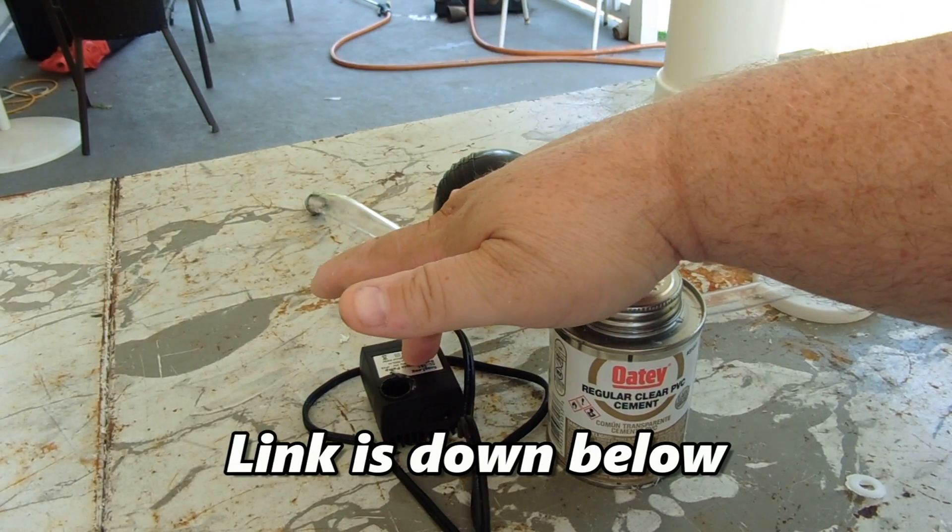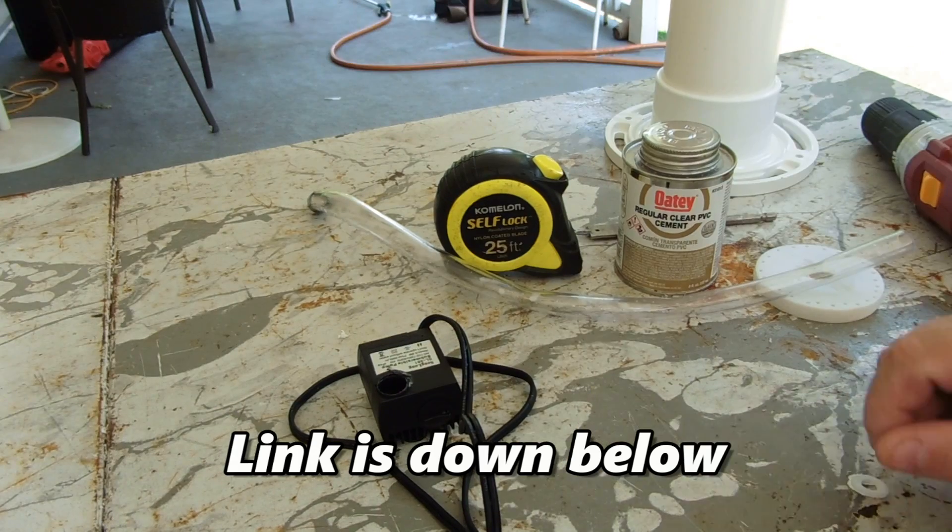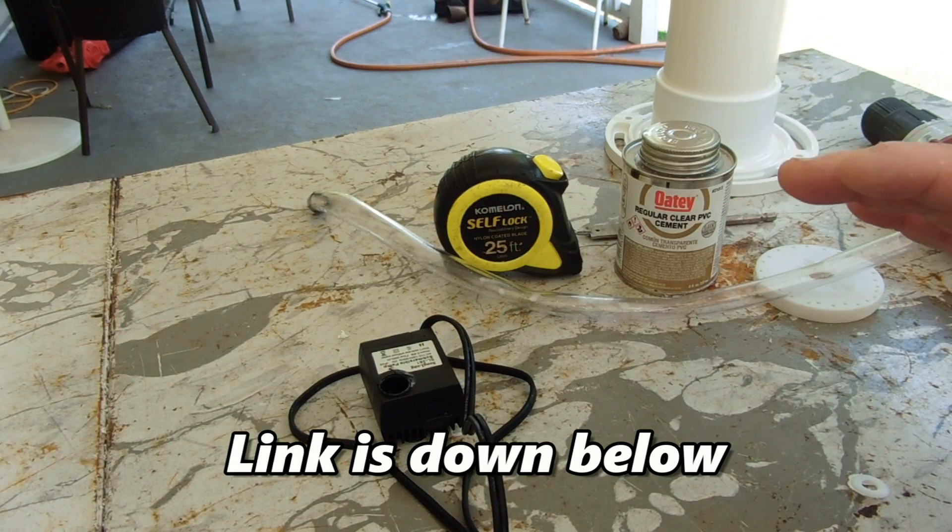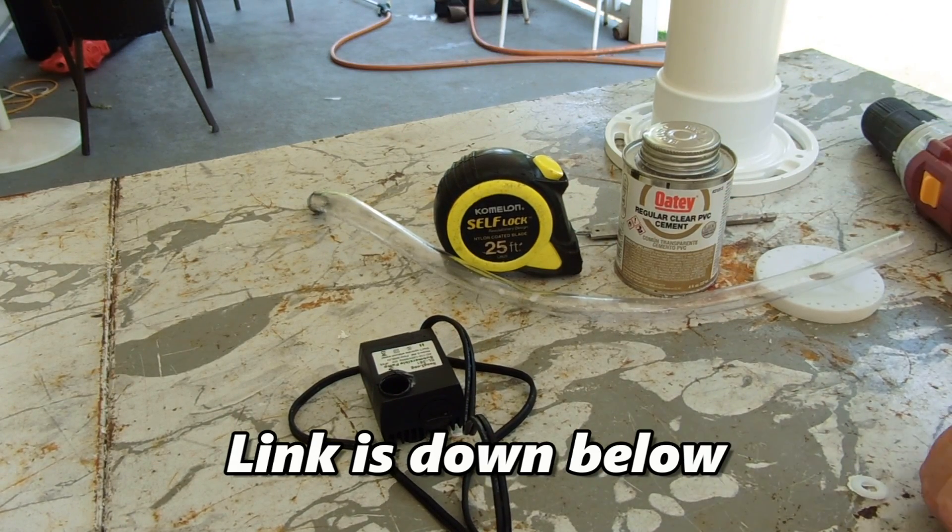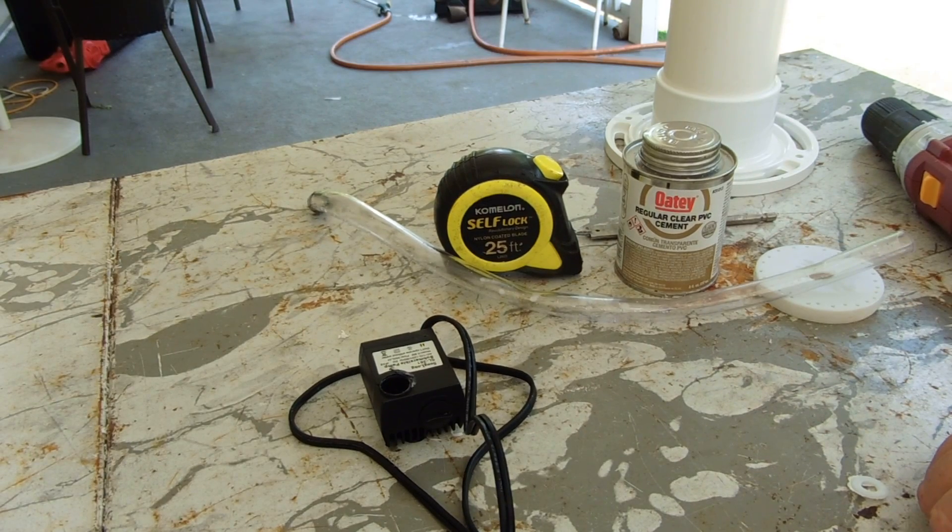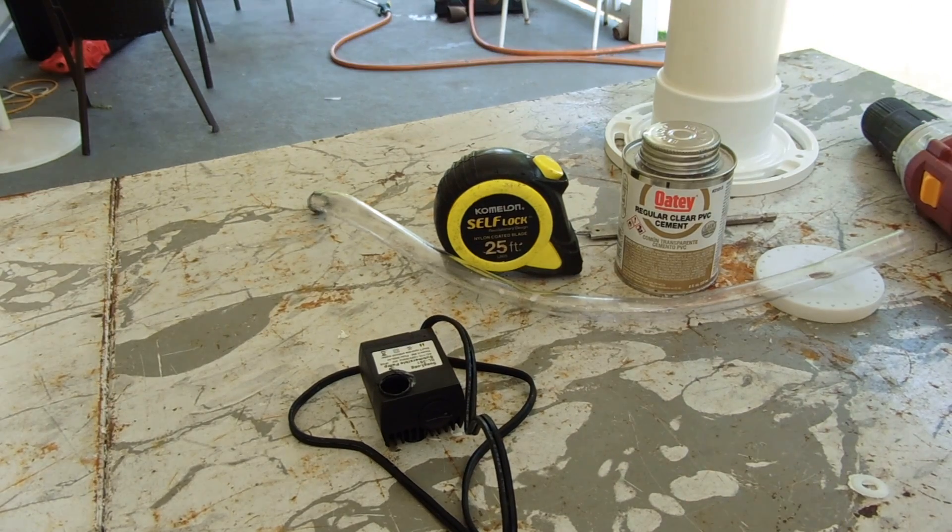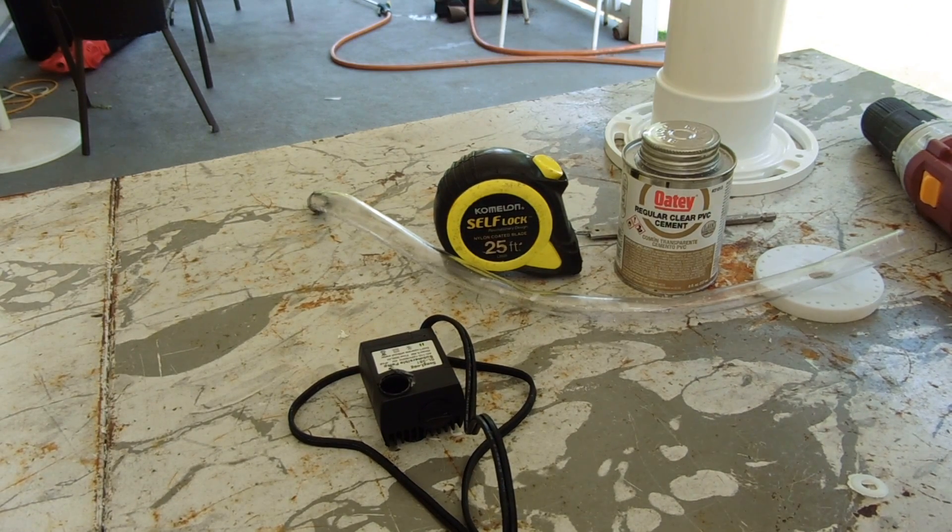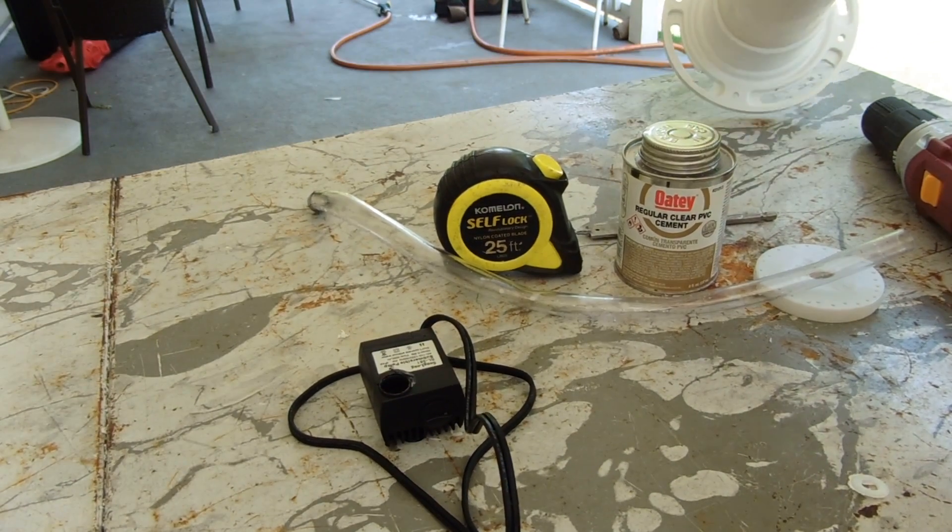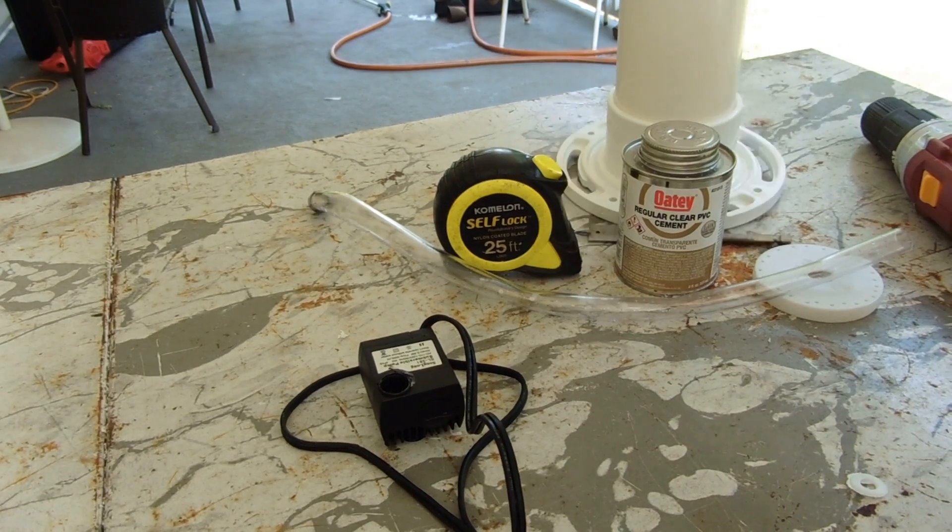There's a link to the pump at the bottom so that you know where you can buy it. It's only $10 off Amazon, and it fits perfect down in there. That is the problem. You've got to find a pump that's going to be able to fit in a 3-inch pipe.